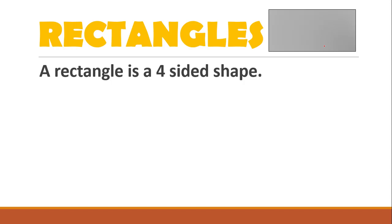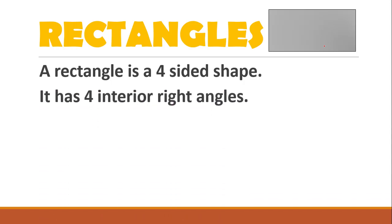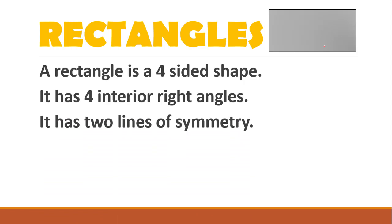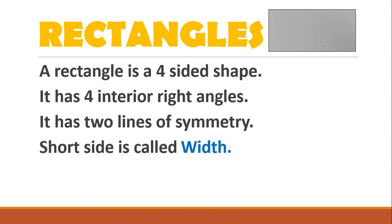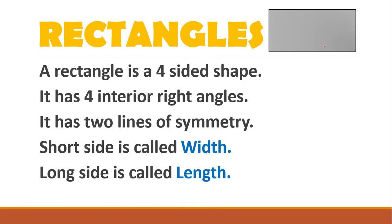A rectangle is a four-sided shape. We are talking about quadrilaterals and a rectangle is one of them. It has four interior right angles. The word interior means inside, and right angles are angles of 90 degrees. It also has two lines of symmetry, which means you can perfectly fold it so that one corner touches another corner only two times. The short side of a rectangle is called width and the long side is called length.